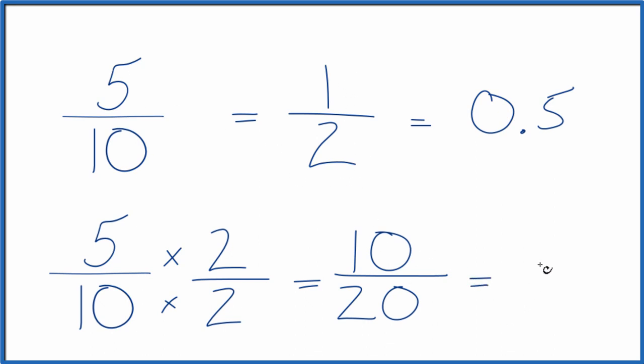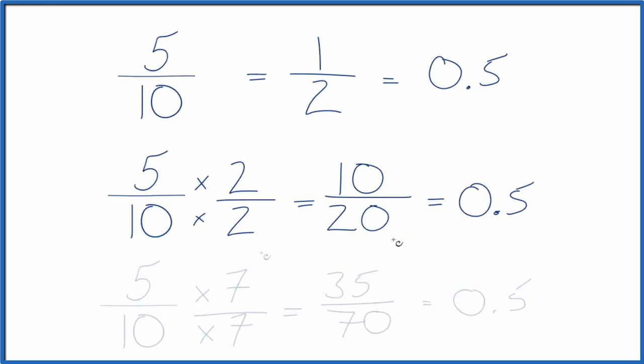If you divide 10 by 20, you get 0.5. Same value. Last one: 7 over 7 is 1 again, so we're just multiplying by 1. We get 35 seventieths, another equivalent fraction for 5 tenths.